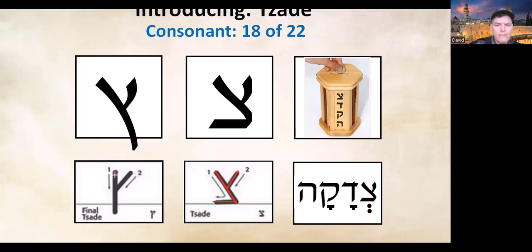Let's turn our attention to the tsade sofit — this is even easier, just has two strokes. Start at the top, make sure that we go beneath the baseline, which is reflected in this black line here. The second stroke is at an angle — the same type of angle as an X would be formed. And there you have your tsade sofit.